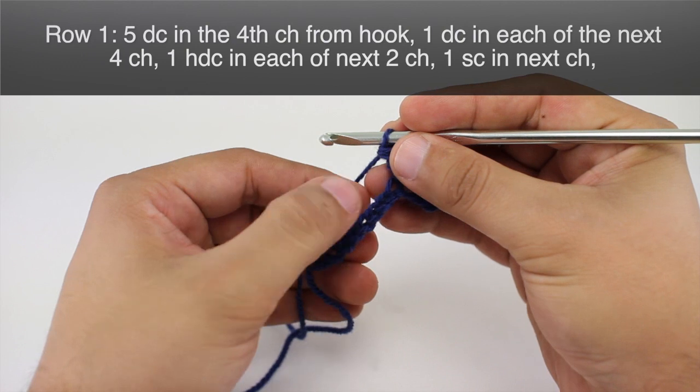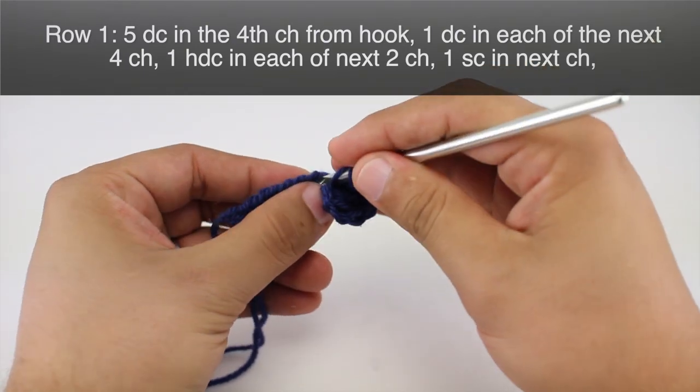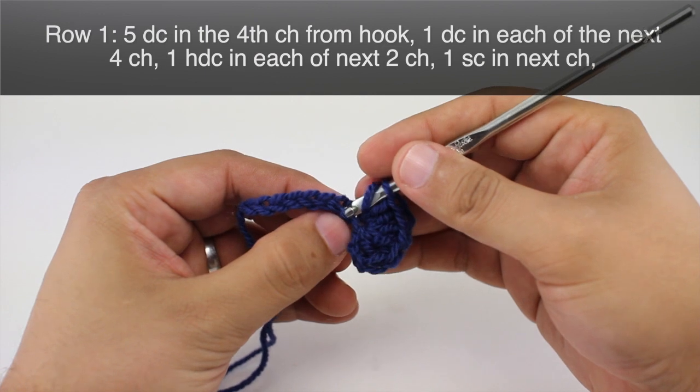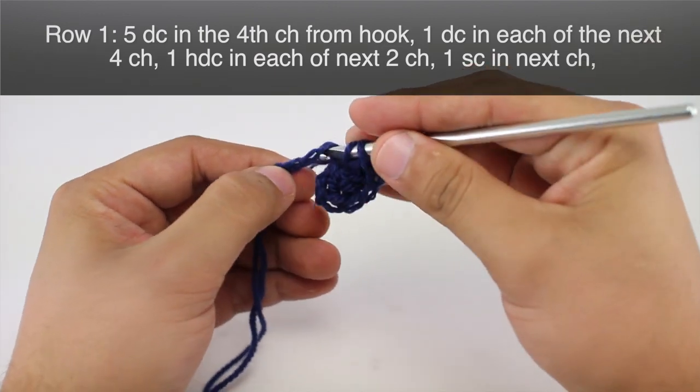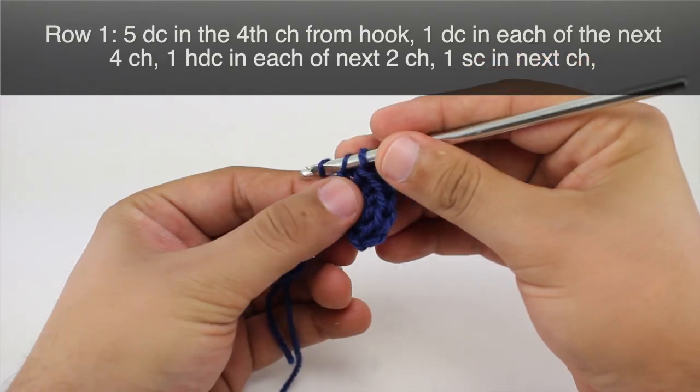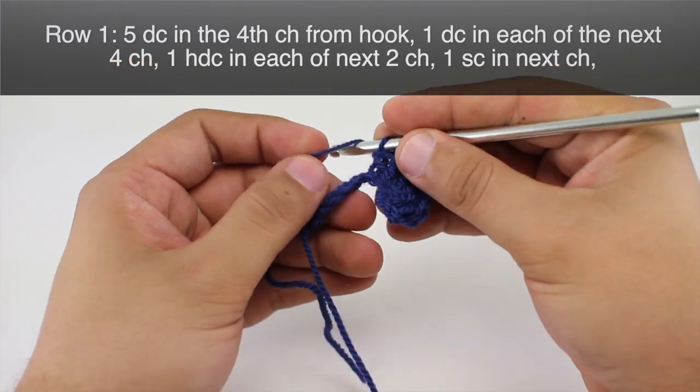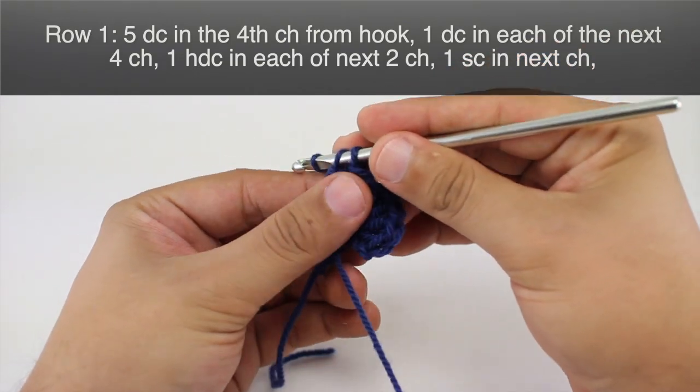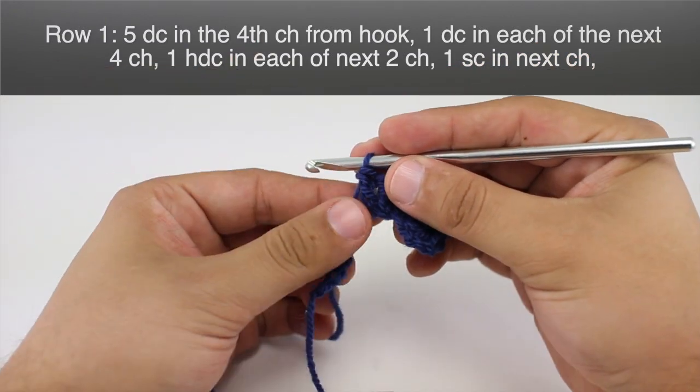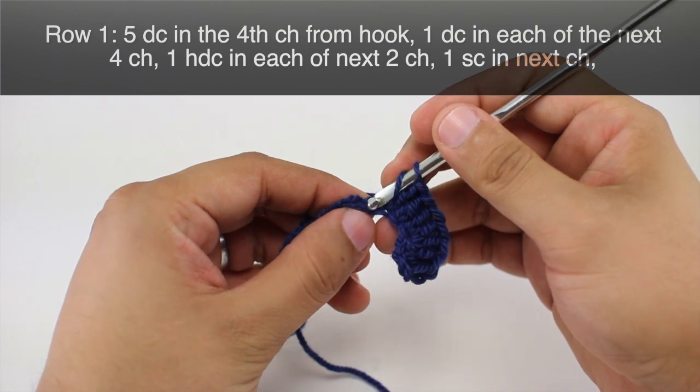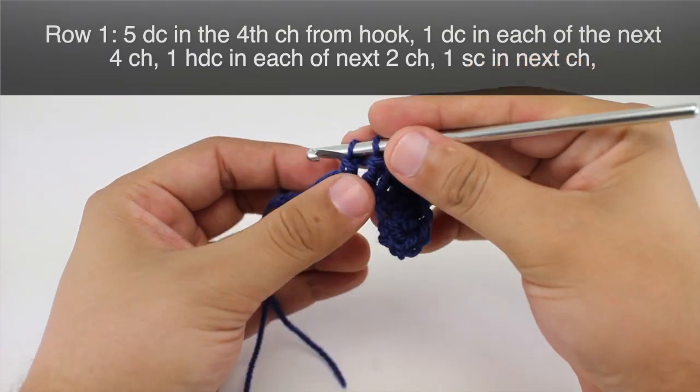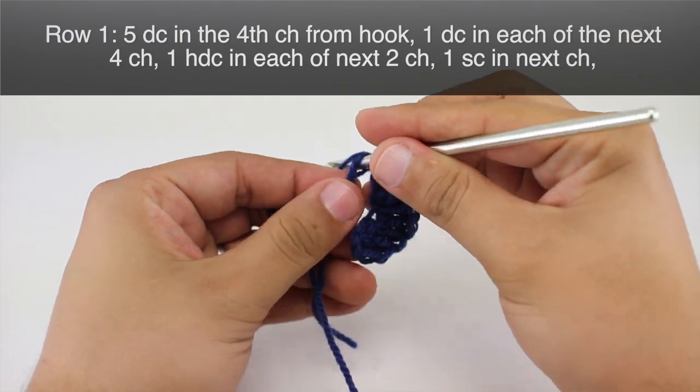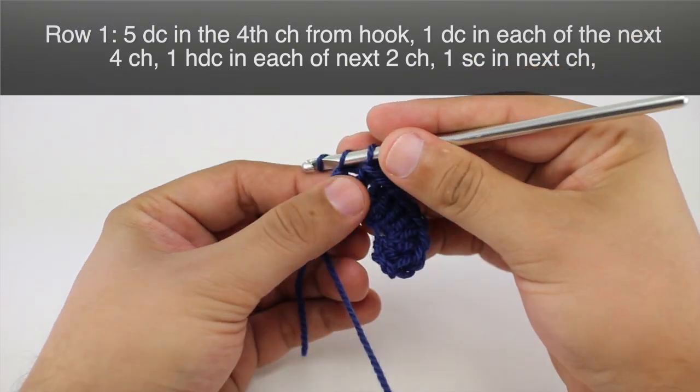Next we are going to do one double crochet in each of the next four chains. So we'll do here. Usually you want to go through the bottom part of the chain loop there. Now you don't have to do that if you don't want to, but it tends to make a little bit nicer looking edge. So that's one, two, three, and four.